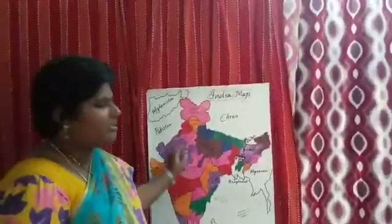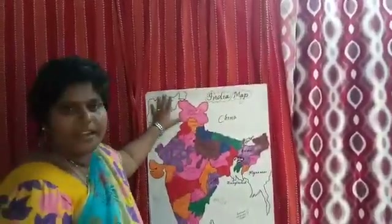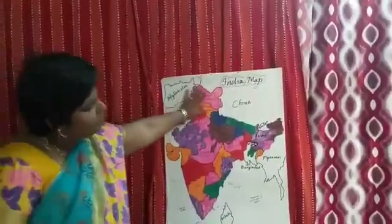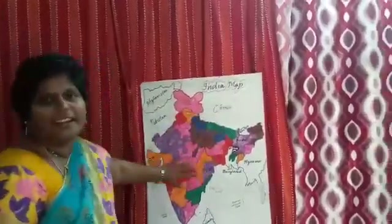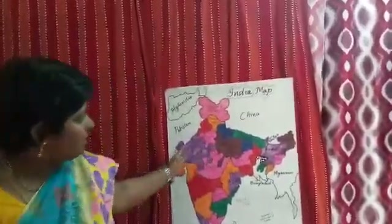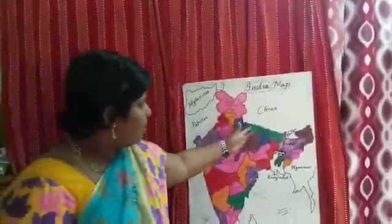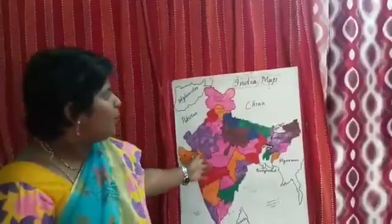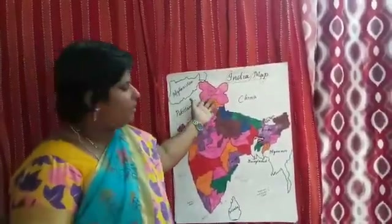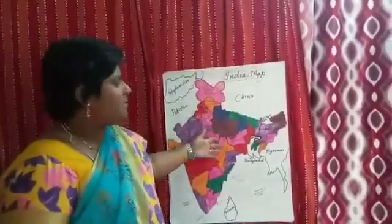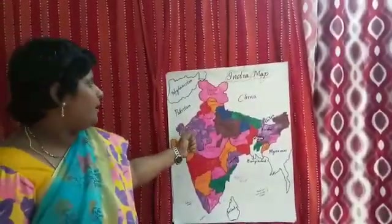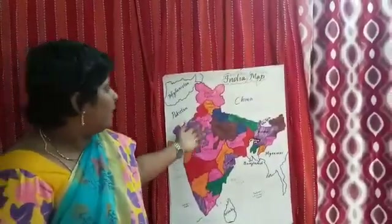This is our India map. Look at it, children. This is a beautiful country. India is a beautiful country. It is having all together 28 states and 8 union territories.